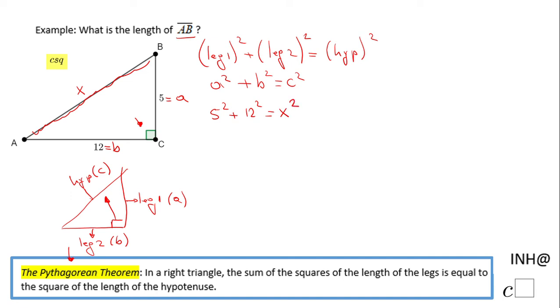And here is nothing else than evaluate. 5 squared is 25, 12 squared is 144, equals x squared. And then we have 25 plus 144, that is 169, equals x squared.